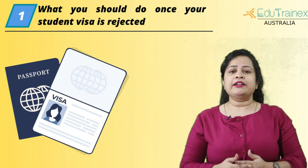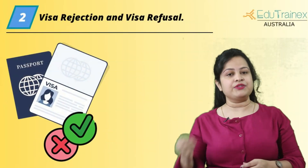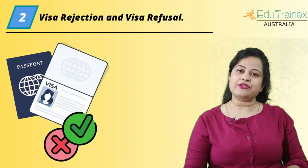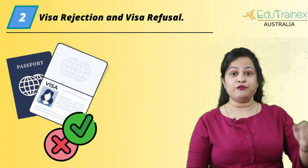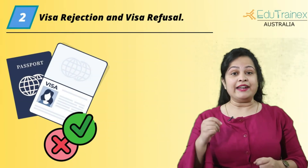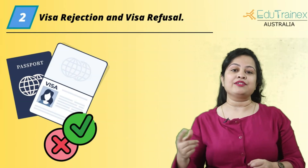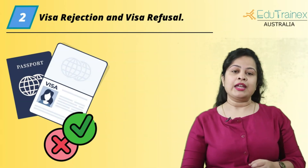There are two cases: visa rejection and visa refusal. Your visa can get rejected on the grounds of fraud or forgery, and visa rejection might even lead to a ban on applying for any other visa in the future.